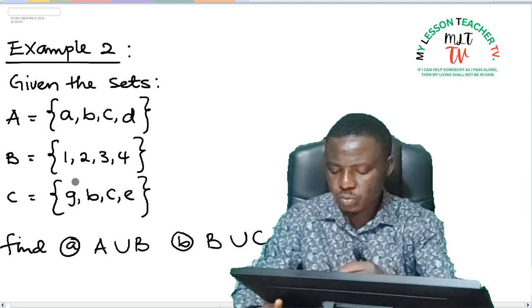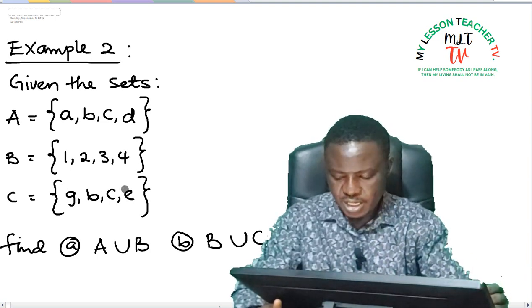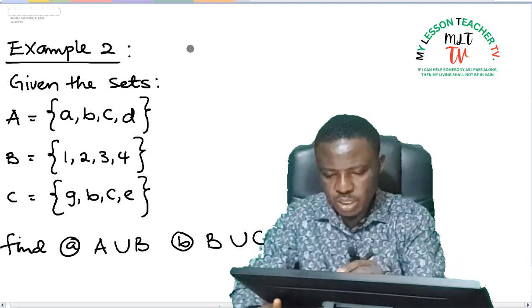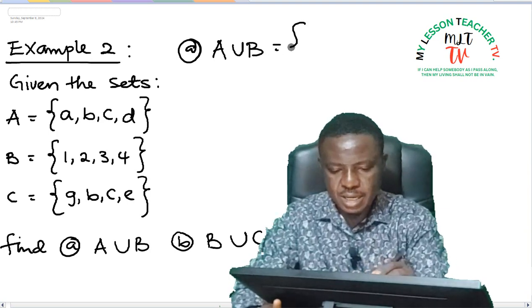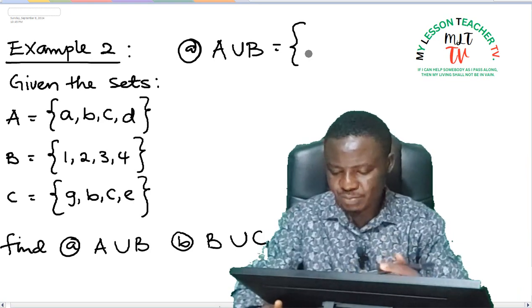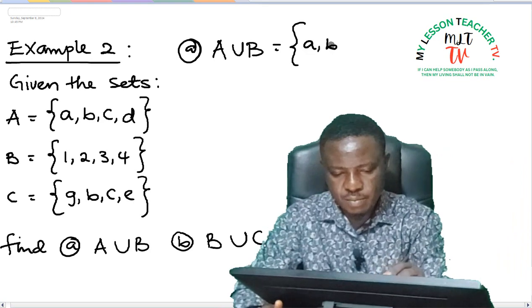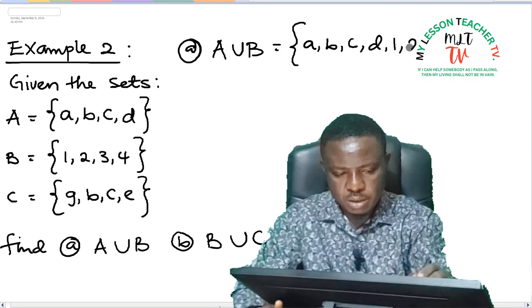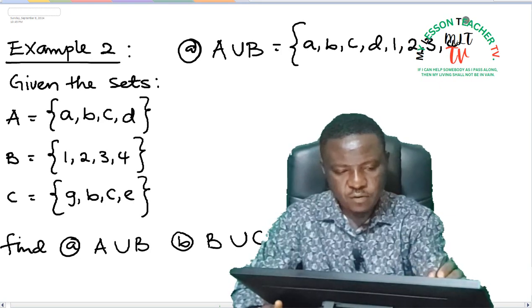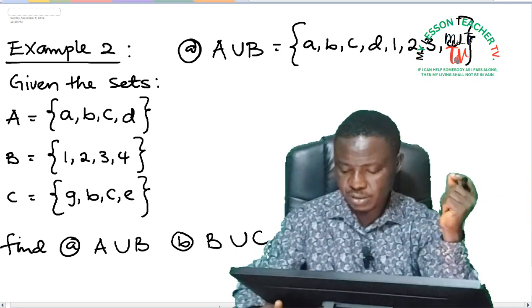We are asked to find A union B. So A union B simply means all the elements in A plus all the elements in B without repetition. So this is going to be {a, b, c, d, 1, 2, 3, 4}. So this is the union of two sets A and B.